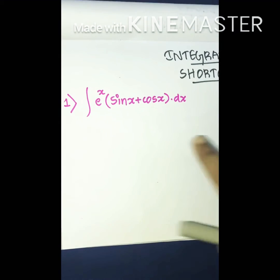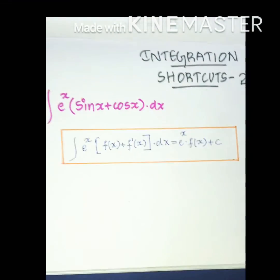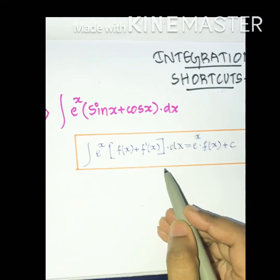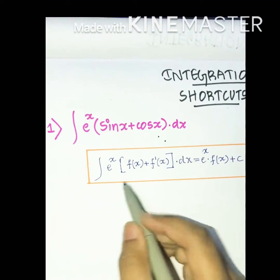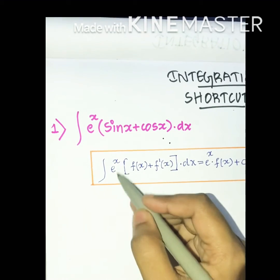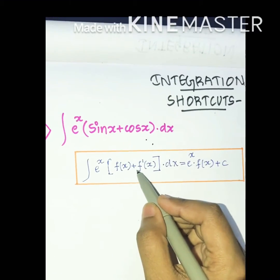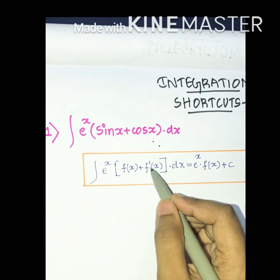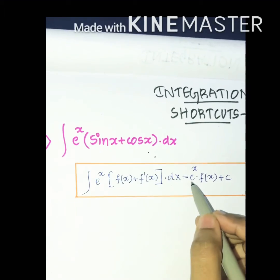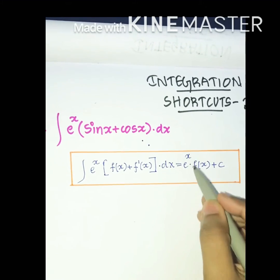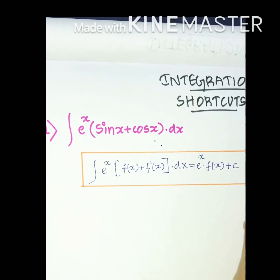Here is the shortcut: if the given question is in the form of integration of eˣ into [f(x) + f'(x)] dx, where f'(x) means d/dx of f(x), then the answer is eˣ·f(x) + C, where C is a constant.